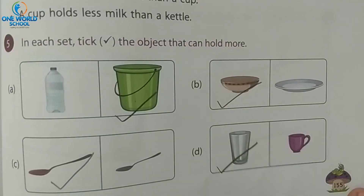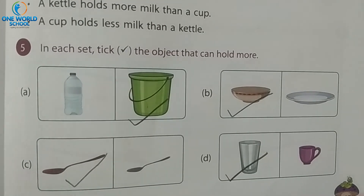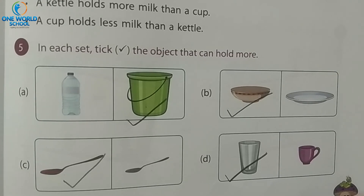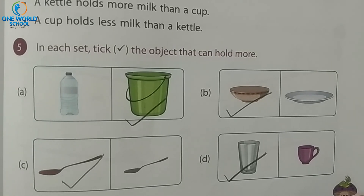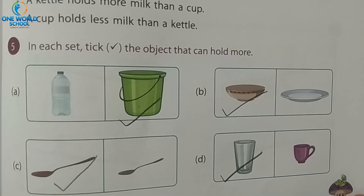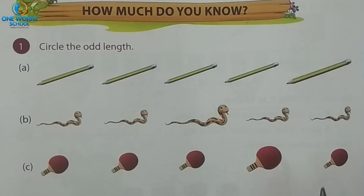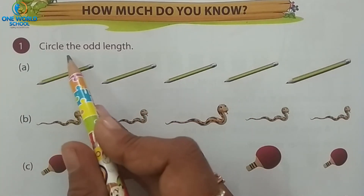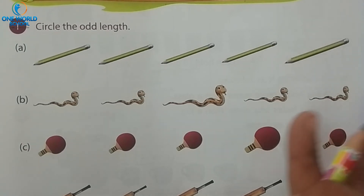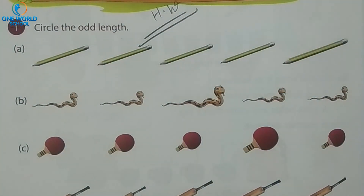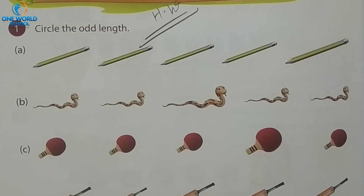So, what have we learnt in this chapter? We learnt about length — long and short. Then we learnt about weight — heavy and light. Then capacity — more and less. Now turn the page. Next is 'How much do you know' — the revision section. In number 1, circle the odd length, but complete Exercise 1 as homework. The chapter is over. In the next class, we will learn a new chapter. Bye students, take care.